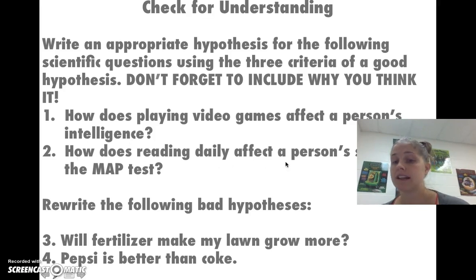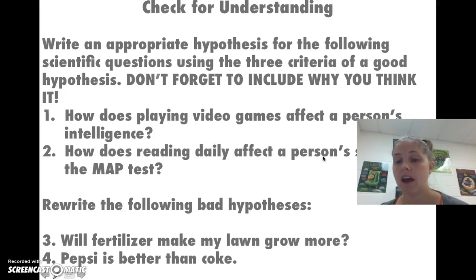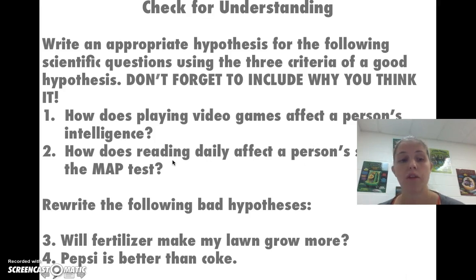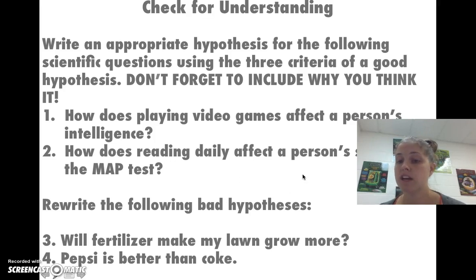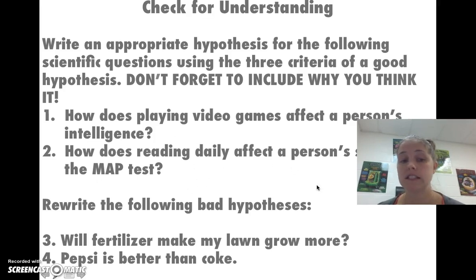For question two — how does reading daily affect a person's score on the MAP test — you need an independent variable, a dependent variable, and some research. For example: if I read five books per week, then my score on the MAP test will be much higher, because reading increases your ability to remember things. Again, independent variable, dependent variable, and your reasoning based on research.